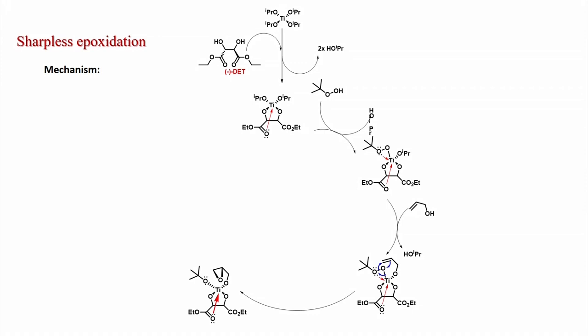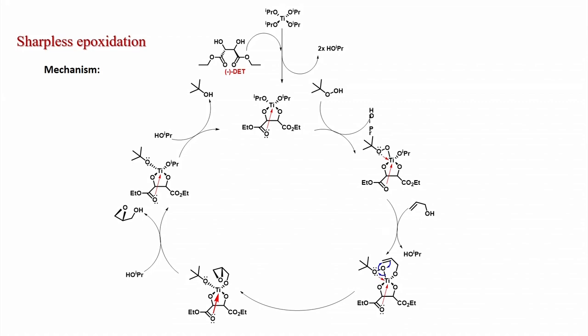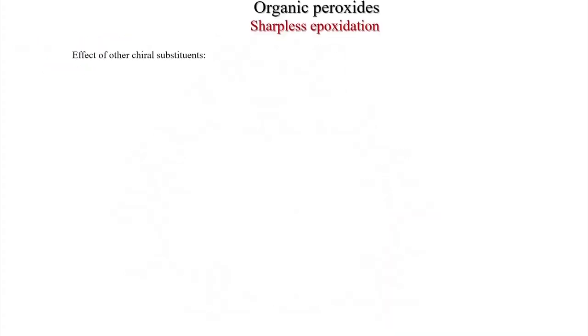Now the desired epoxidation occurs because the metal center is in a chiral environment, so facial selectivity is achieved — the epoxide forms from the top face. After the reaction, isopropanol that was eliminated earlier returns, the product is released, and the catalyst is regenerated. The titanium and ligand are regenerated; only the peroxide is consumed to give tert-butanol. That is why stoichiometric peroxide is needed, but titanium and the tartrate ligand can be used in substoichiometric amounts.